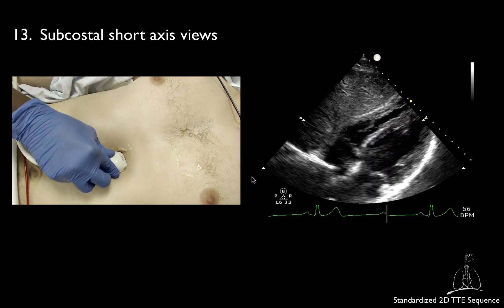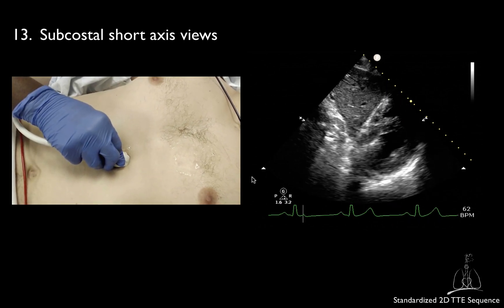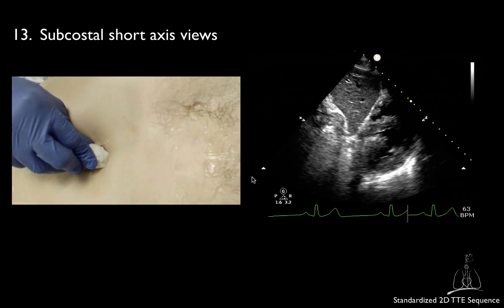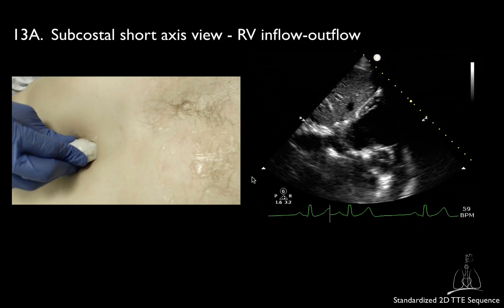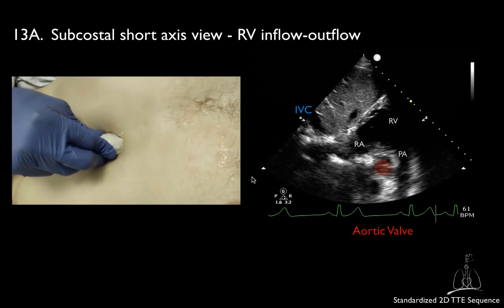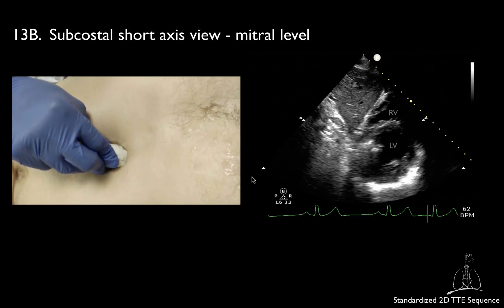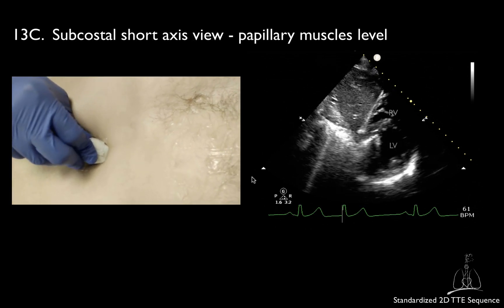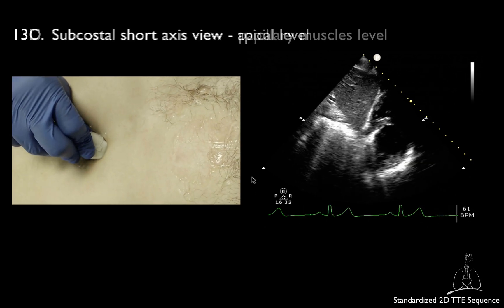When parasternal views are of poor quality, short axis views can be obtained from the subcostal window, but from a different perspective. Tilting the transducer from the patient's right to left will allow you to obtain the right ventricular inflow-outflow view, the short axis of the mitral valve view, the midpapillary view, and the view of the apex.